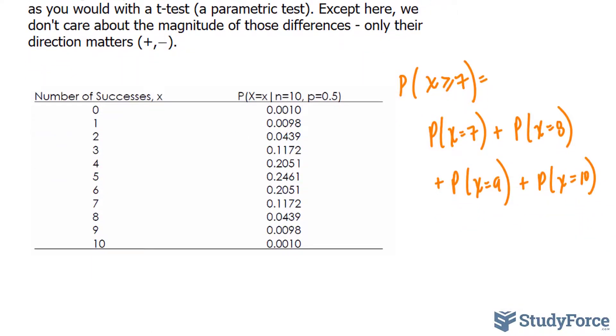And then, taking these values from this table, this number is 0.1172, this one is 0.0439 and so on. I'm taking these from here, here, we end up with a probability that X ≥ 7 being equal to 0.1719.